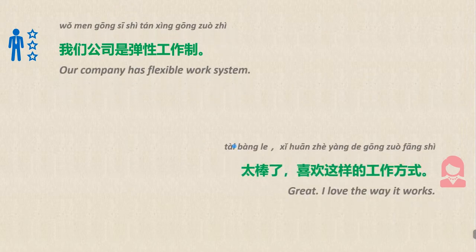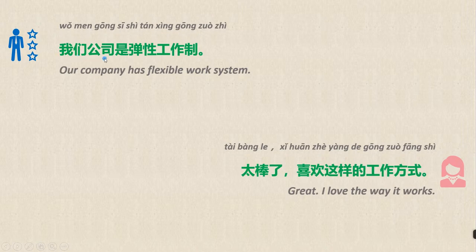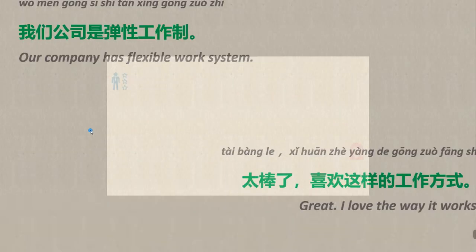First, let's look at the conversation. 我们来看第一段对话。 The dialogue is: 我们公司是弹性工作制。太棒了，喜欢这样的工作方式。 我们 means 'our'; 公司 means 'company'; 弹性工作制 means 'flexible work system'; 太棒了 means 'great'; 喜欢 means 'love'; 这样的工作方式 means 'the way it works.' Read after me: 我们公司是弹性工作制。太棒了，喜欢这样的工作方式。非常好。